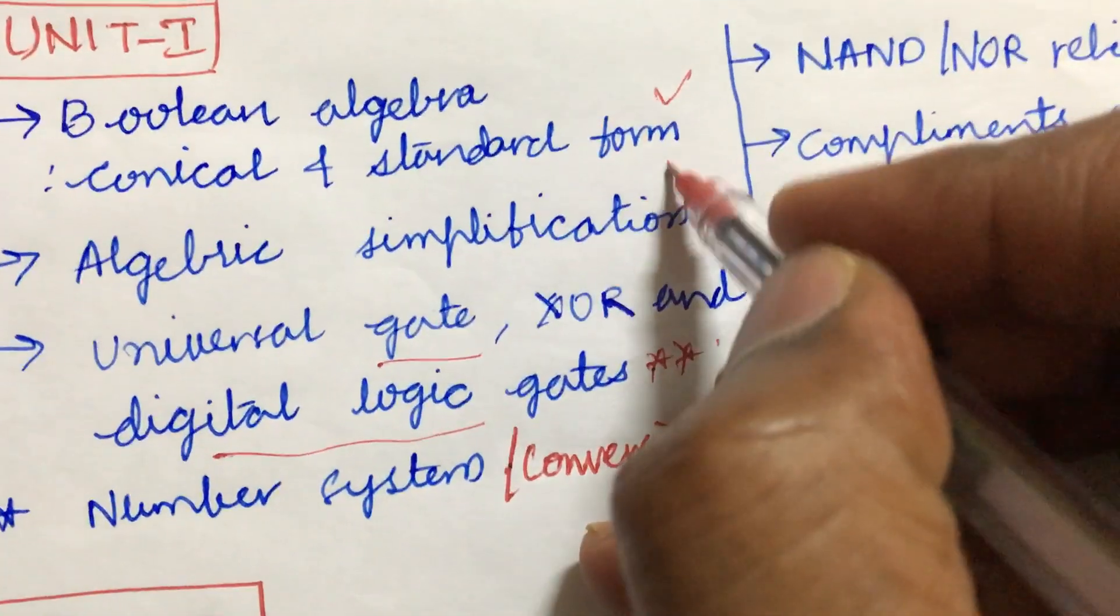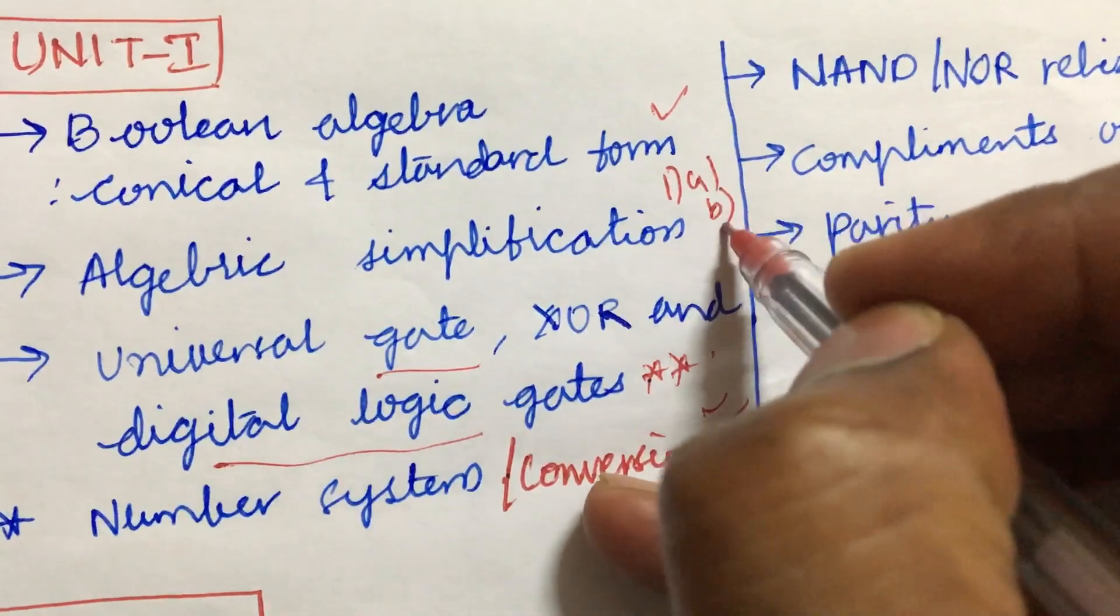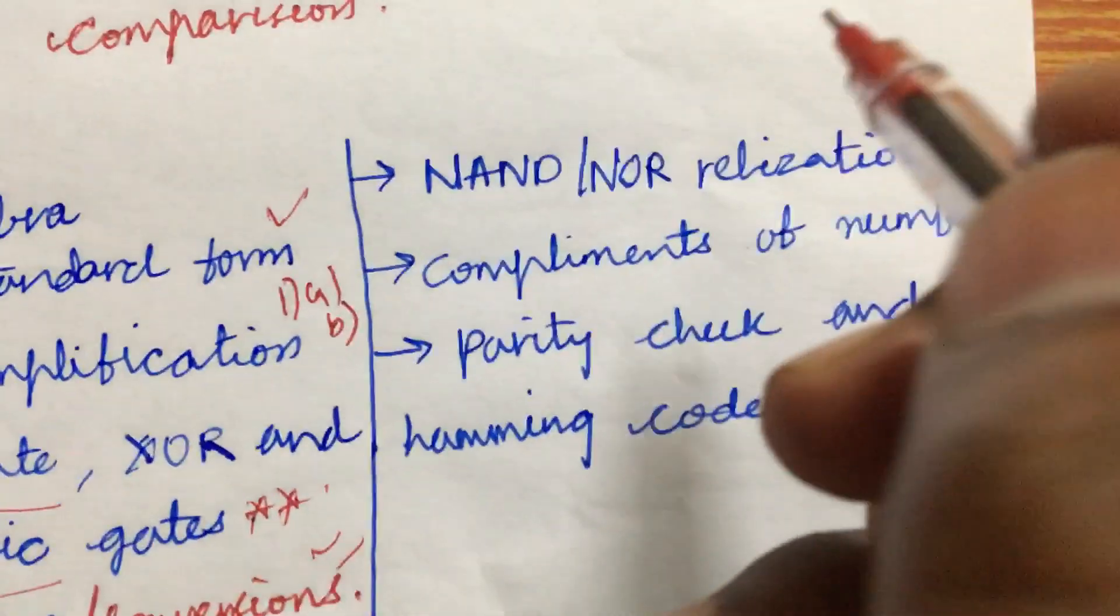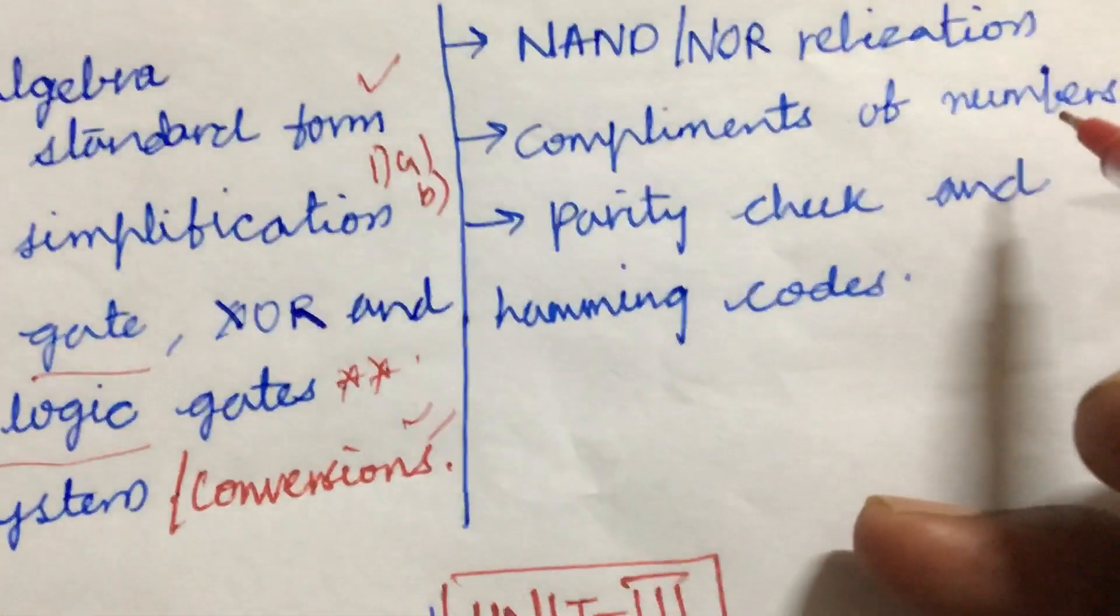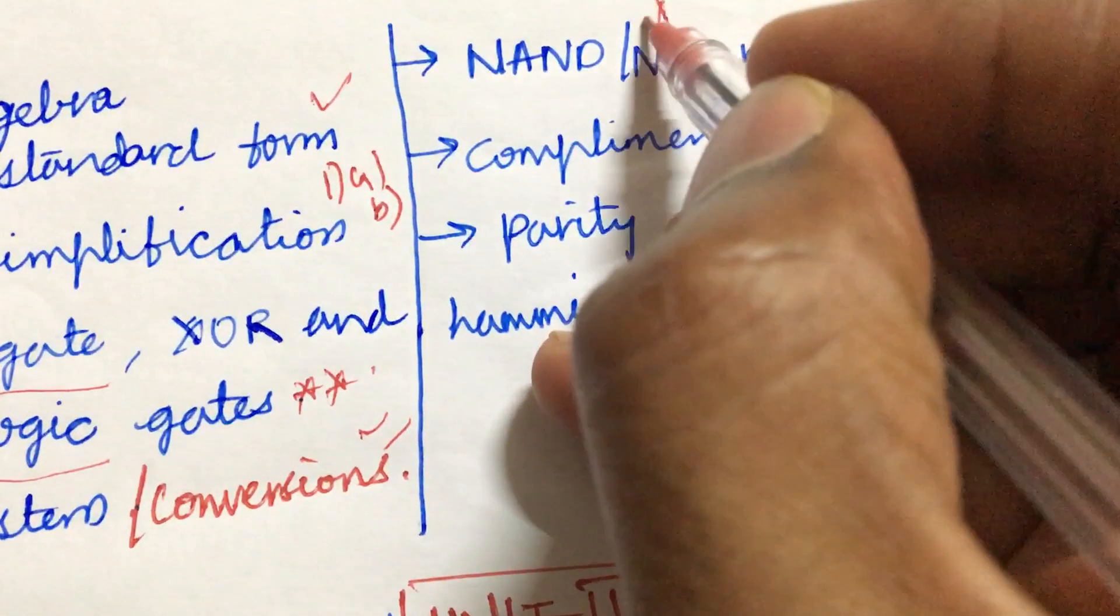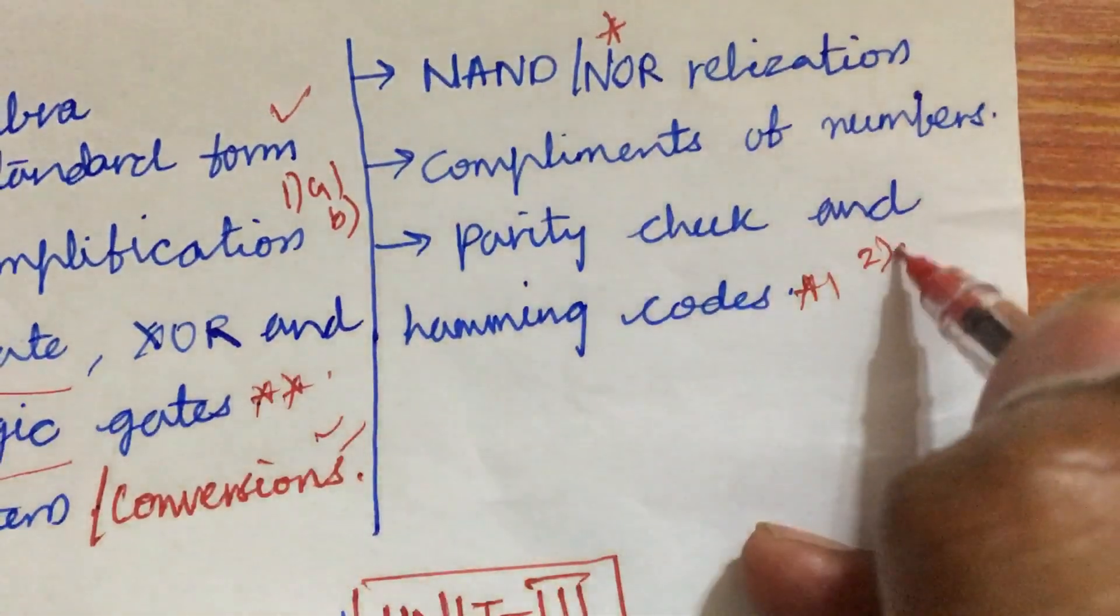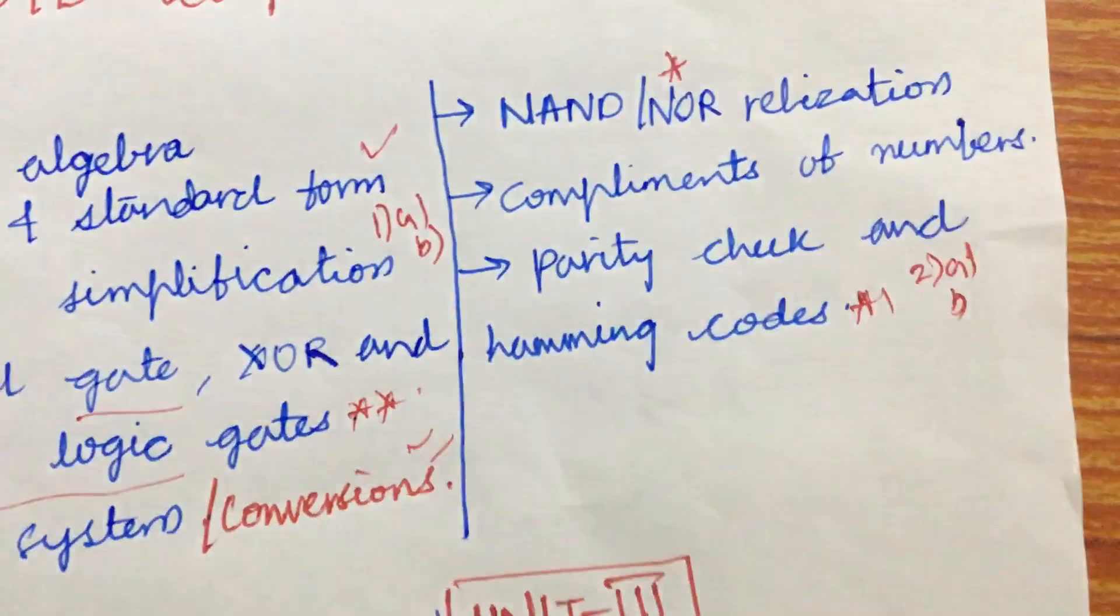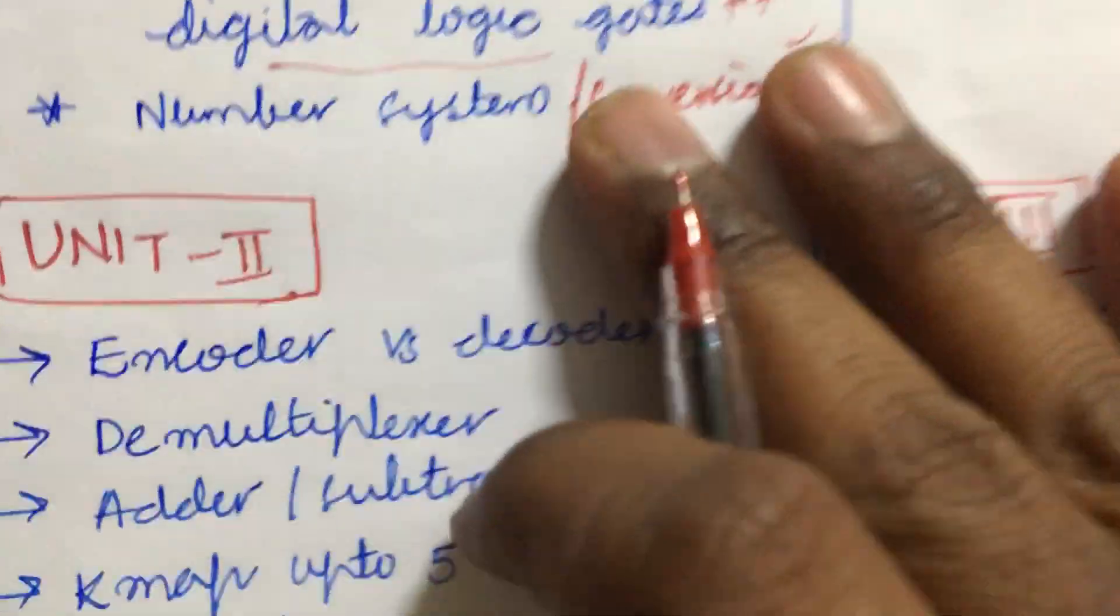And the number system and its conversion, from this part we can expect 1A as well as 1B dear students. Later, NAND or NOR as well as complements of numbers and the parity check and the hamming code, from these two parts we can expect maybe 2A as well as 2B. These all are the very important and gunshot questions.